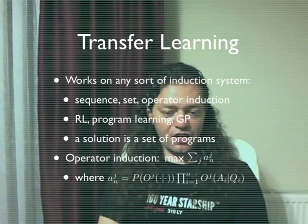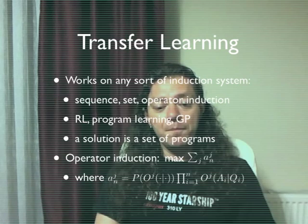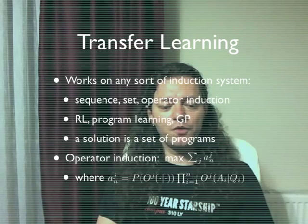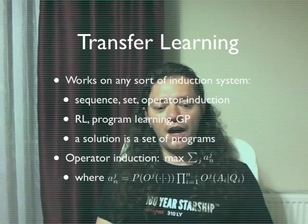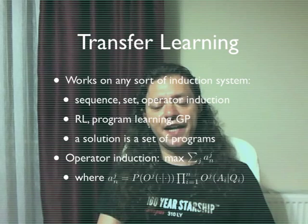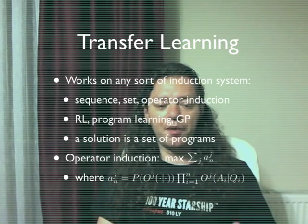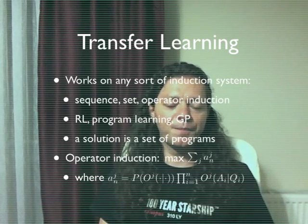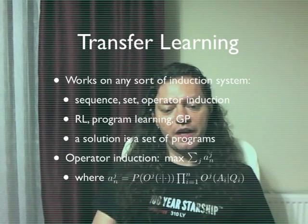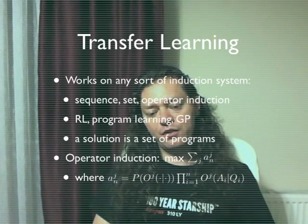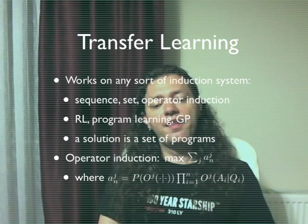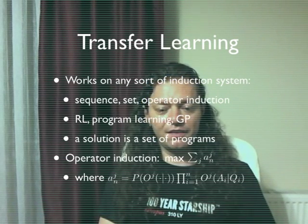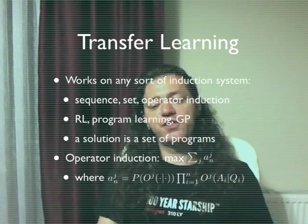For instance, in operator induction, you maximize this expression — the summation of aj's. You can see that aj is defined as: on the left-hand side, there is the a priori probability of oj, which is the j-th probability model, and on the right-hand side you have a product that quantifies how well the probability model reduces the dataset of given question-answer pairs.